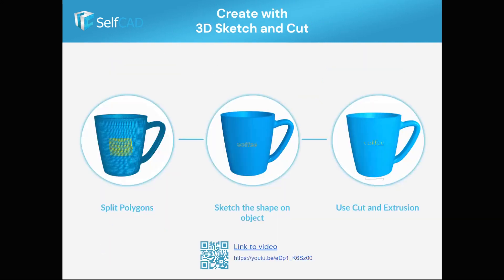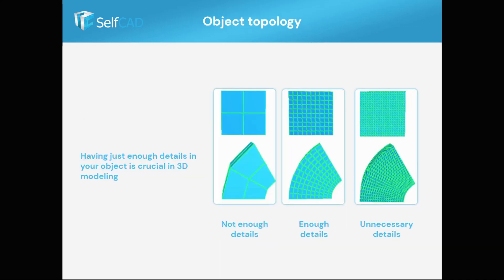SelfCAD has also unique wrapping and cutting tools. In this example, you can see how to wrap text, use Cut with Profile to cut the text into the mesh, and then use Extrusion to engrave it.